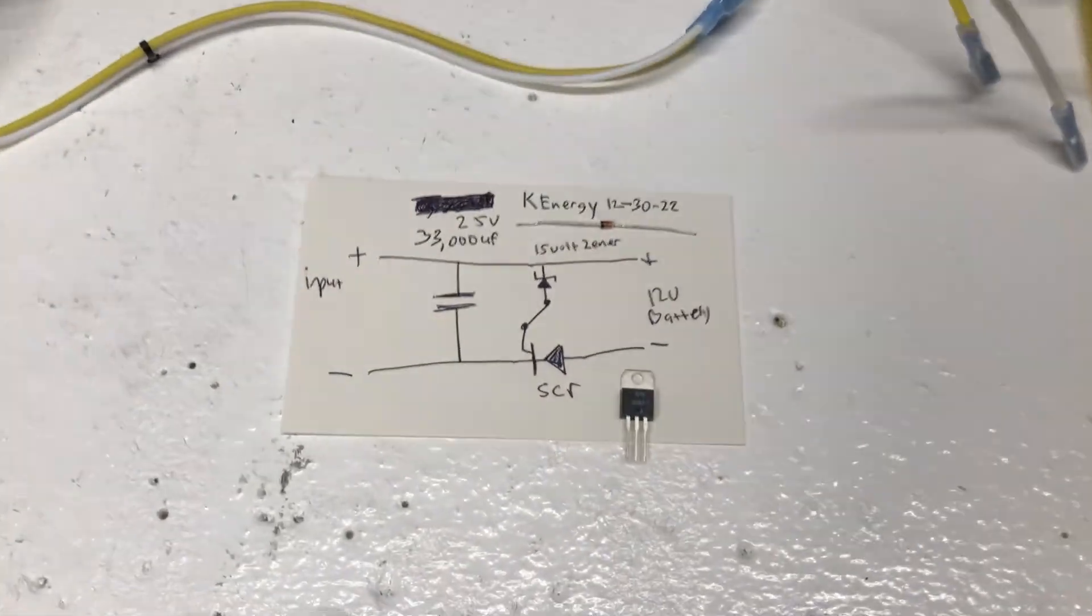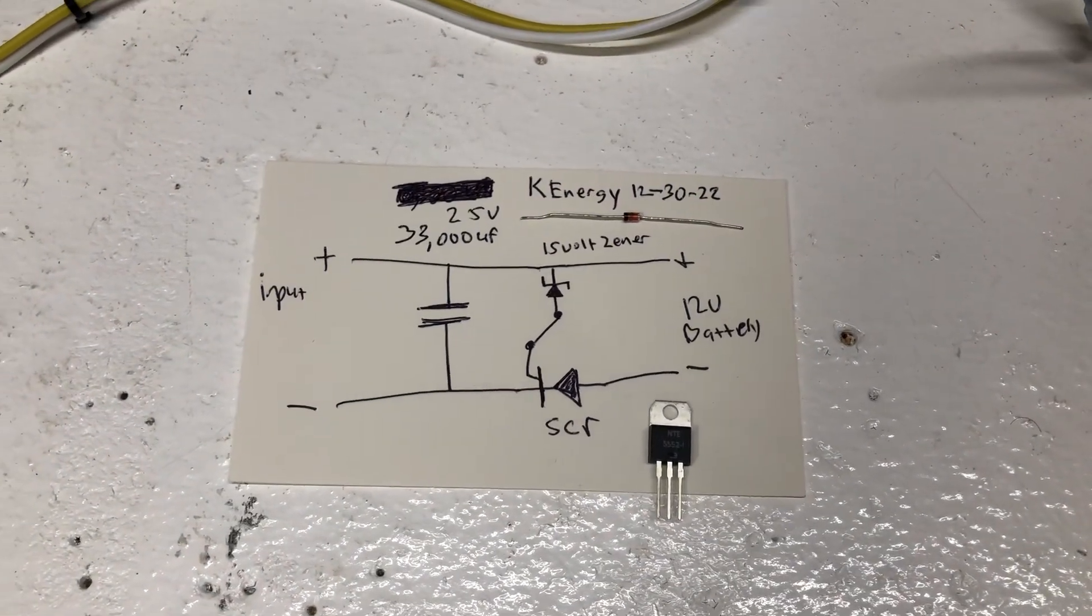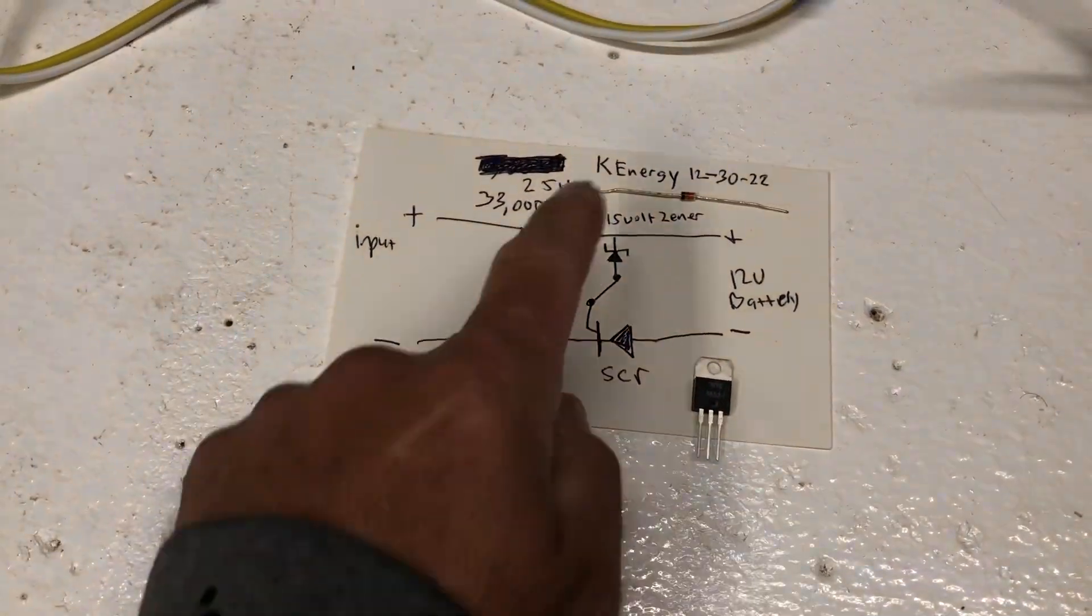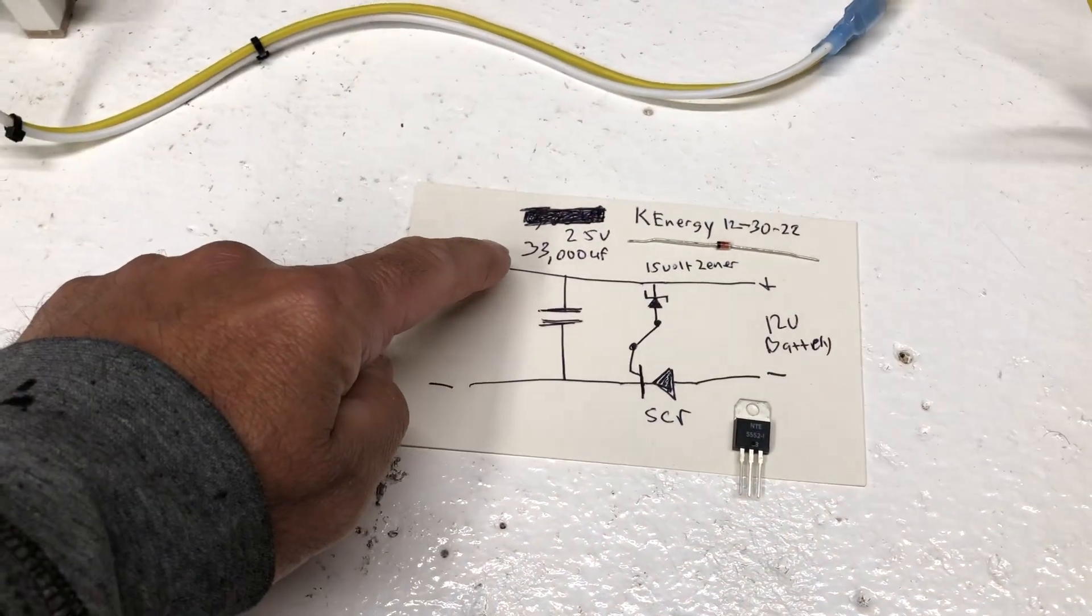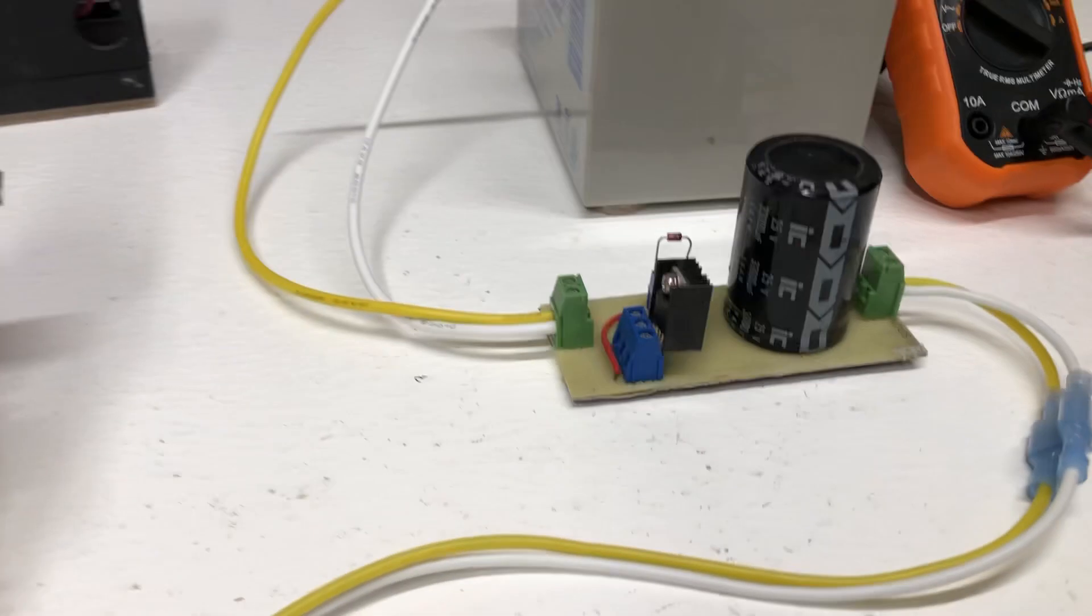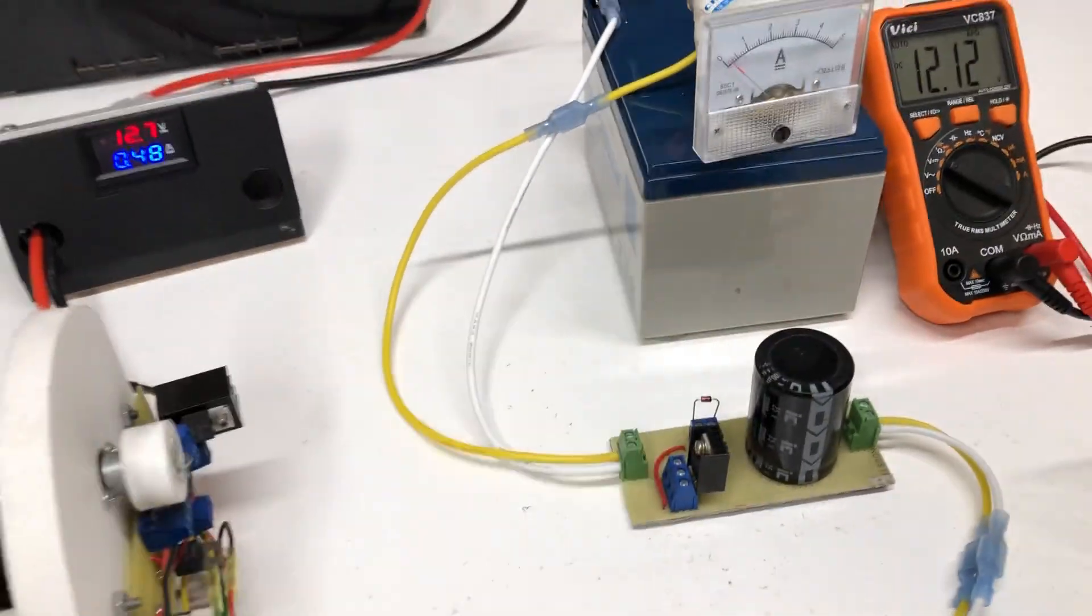This is the circuit right here. For those of you that wanted the circuit: SCR, zener diode, 33,000 microfarad capacitor, which is this one right here. See the SCR, the zener diode, and the capacitor.